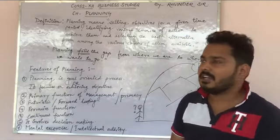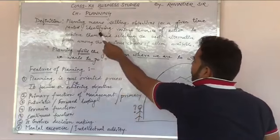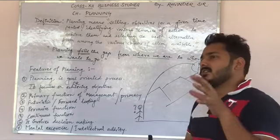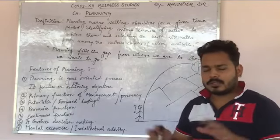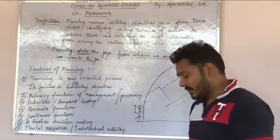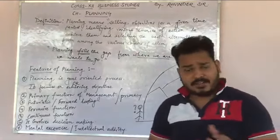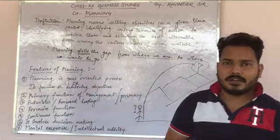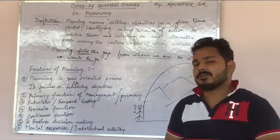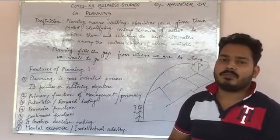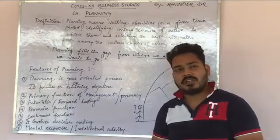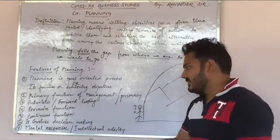6th point: decision making. Planning involves decision making — क्योंकि हमें various course of actions identify या formulate करने हैं, और उनमें से जो best होगा उसको select करना है. जैसे suppose करो आपको हरिद्वार जाना है — आपके पास options हैं: by train, by bus, personal conveyance, or by air. अगर आपने train decide किया, तो कौन सी train? Road चुना तो कौन सा road? उन सारे options में से एक decide करना ही decision making है. इसलिए planning involves decision making.